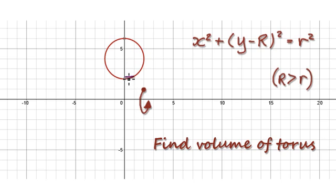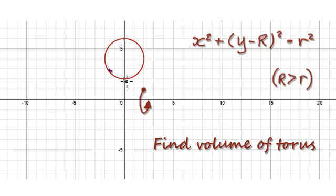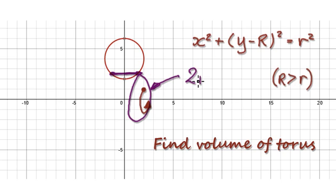Looking at this one particular slice, we need to take the x-distance from here to here and then multiply it by 2 to get the whole width of the slice. Once we've got that whole distance, we multiply it by the circumference of the circle, which is 2πy, where y is the radius of the shell at that height.